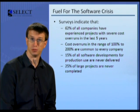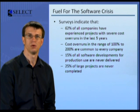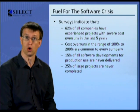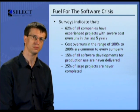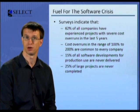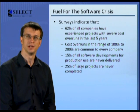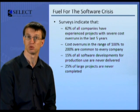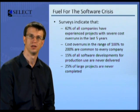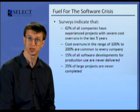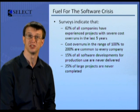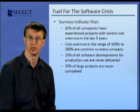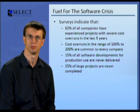It seems unfashionable to still talk of the software crisis when there appears so much effort and money being spent on software development. Yet the evidence is all around us. One of the most common symptoms of the software crisis is the runaway. Surveys indicate that 62% of all companies have experienced projects with severe cost overruns in the last five years, and that cost overruns in the range of 100% to 200% are common to every company. 15% of all software developments for production use — excluding research and development — are never delivered.